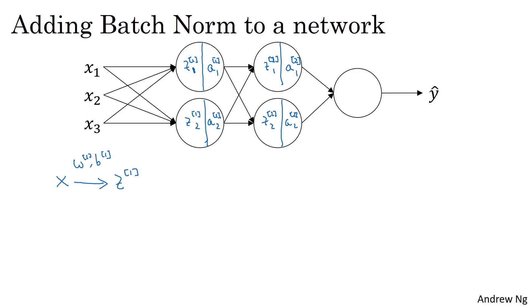But what we'll do in batch norm is take this value z1 and apply batch norm, sometimes abbreviated bn to it. That's going to be governed by parameters beta1 and gamma1. This will give you this new normalized value z tilde 1. Then you feed that to the activation function to get a1, which is g1 applied to z tilde 1. Now you've done the computation for the first layer, where this batch norm step really occurs in between the computation from z and a.